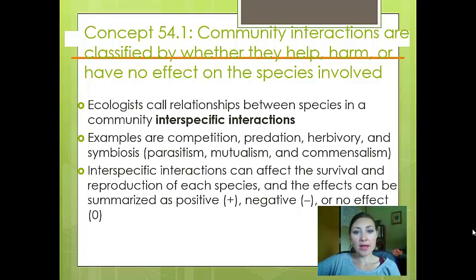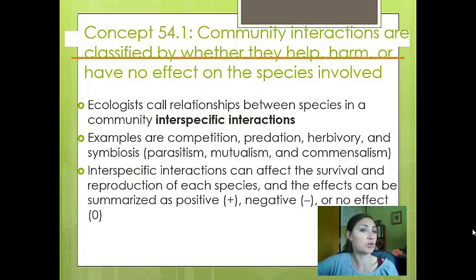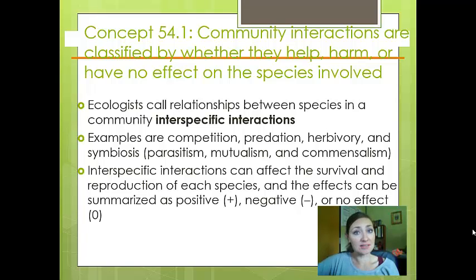When you have a relationship between two separate species interacting, we call that an interspecific interaction. Examples of these are competition, predation, herbivory, as well as any symbiosis such as parasitism, mutualism, and commensalism, which we'll go into detail in just a little bit. They can affect the survival and reproduction of each species involved, and the effects can either be positive, negative, or have no effect at all.